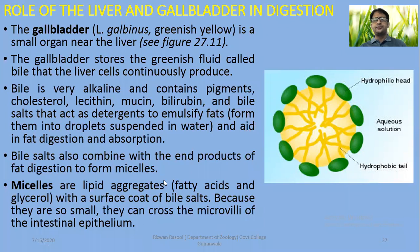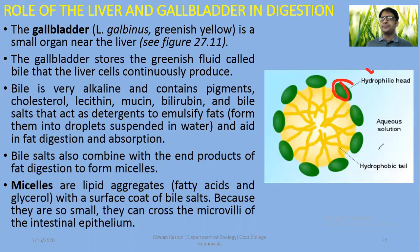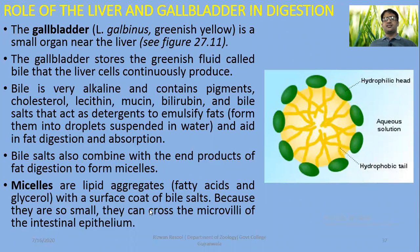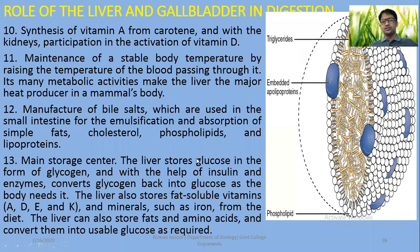Bile salts also combine with the end products of fat digestion to form micelles. The structure of a micelle is shown on the right side — it is a lipid aggregate, for example fatty acids and glycerol, with a surface coat of bile salts, where hydrophilic heads face outward and hydrophobic tails are arranged on the inner side. Because micelles are so small, they can cross the microvilli of the small intestine epithelium for absorption.